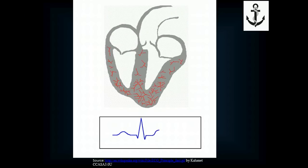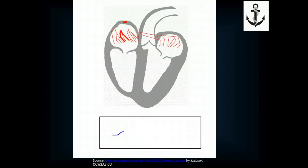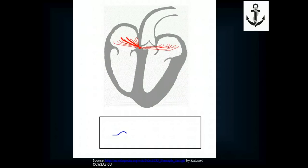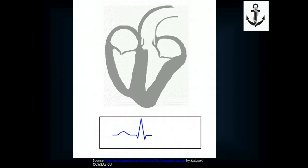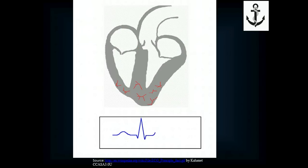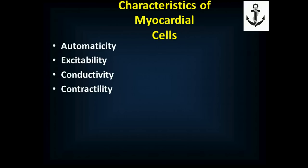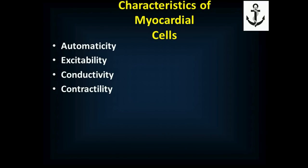On the EKG, the electrical flow starts at the SA node, flows through the atria, concentrates at the AV node — which briefly pauses it — and then flows through causing the lower part of the heart to squeeze, giving you your most effective output. Heart cells are unique in that they can all fire on their own, be excited by other cells, conduct electricity, and contract. Some are specialized as pacemakers like the SA and AV nodes, but any heart cell could act as a pacemaker if needed — sometimes that's very good, sometimes very bad.